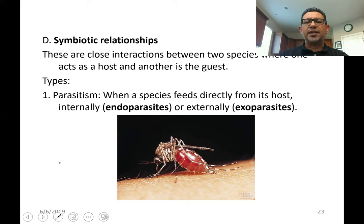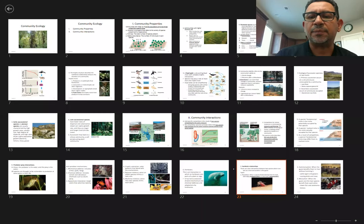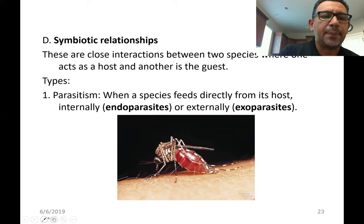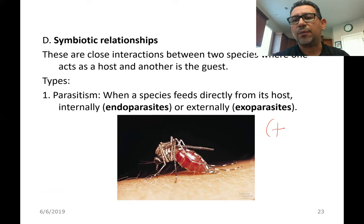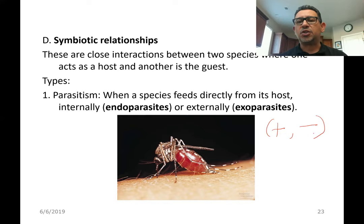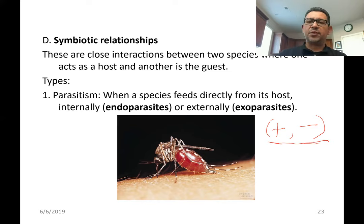In the case of parasitism, a species feeds directly from its host — internally in the case of endoparasites, or externally in the case of exoparasites. In parasitism, the type of relationship can be described as a plus for the parasite — the guest, which is an unwelcome guest — and a negative for the host, meaning the guest obtains a benefit from the blood, sap, or living juices taken from the host, while the host suffers.